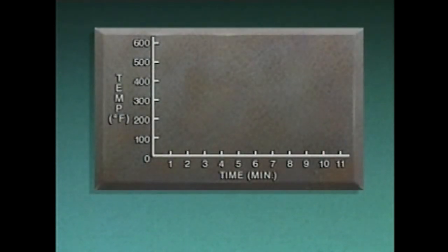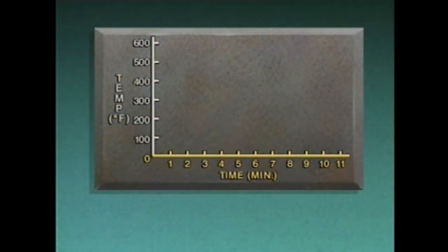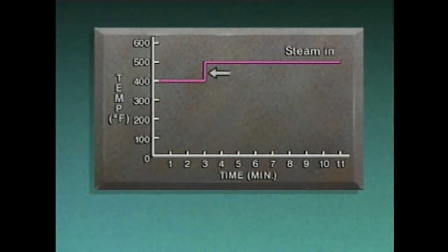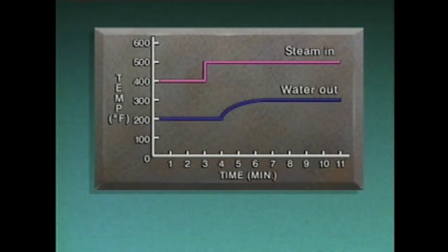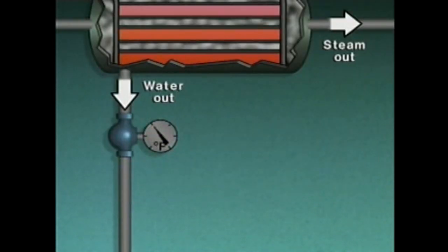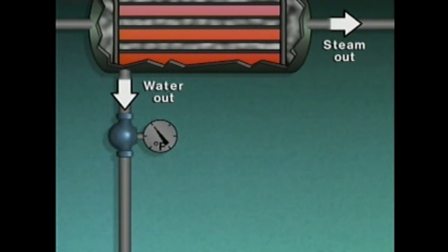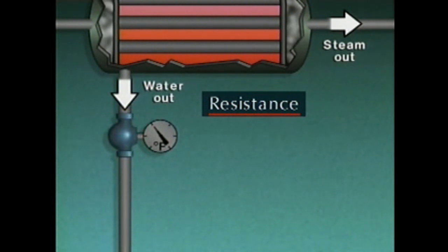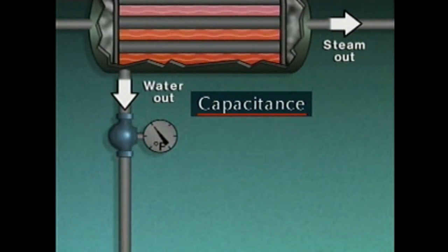It's easier to see how the water temperature changes by plotting temperature changes on a graph, with the vertical axis representing temperature and the horizontal axis representing time. Plotting the steam temperature shows a sudden increase from 400 to 500 degrees — this type of disturbance is commonly called a step input or step change. Plotting the water temperature shows a delay between when the steam temperature increased and when the water temperature first started to rise. This delay is called dead time — the amount of time required to transfer energy from one point to another. In the heater, the delay was caused by resistance to heat transfer through the tubes and by the water's capacitance.